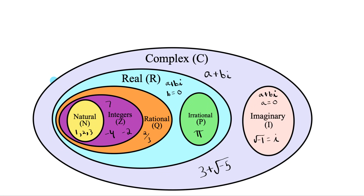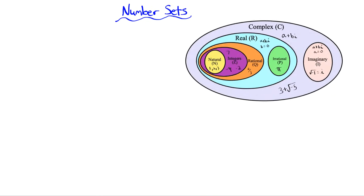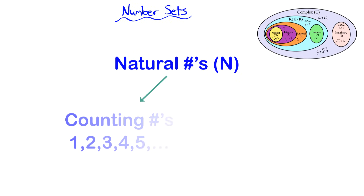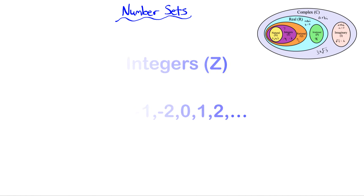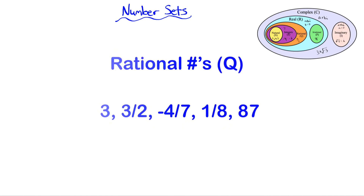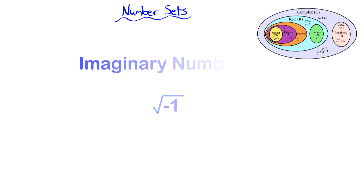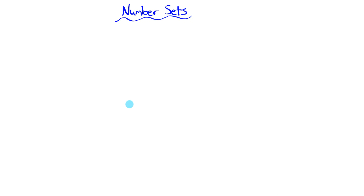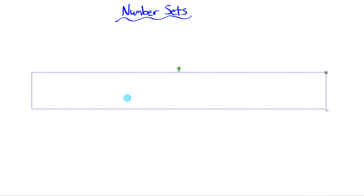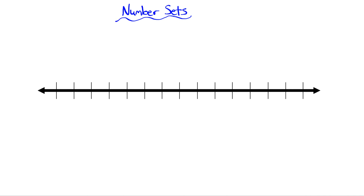Let me talk to you about the different number sets in mathematics. I'll discuss natural numbers, counting numbers, whole numbers, integers, rational numbers, irrational numbers, imaginary numbers, and complex numbers. I'll use this number line to help illustrate the differences between these sets of numbers.